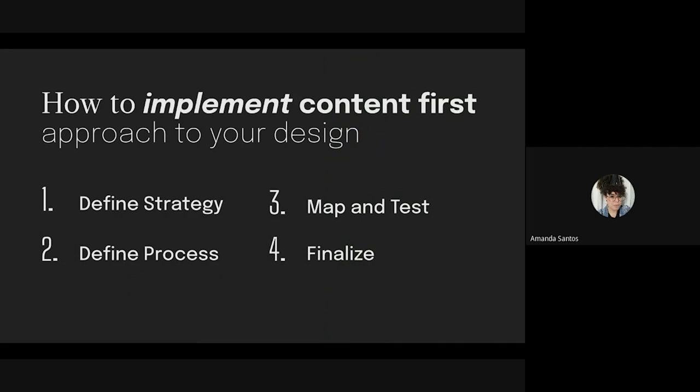How do we implement a content-first approach to our design? Four simple steps: one, define strategy; two, define process; three, map and test; and four, finalize. I'm going to talk about these four steps and we'll talk about different scenarios depending on where your organization is regarding content governance.